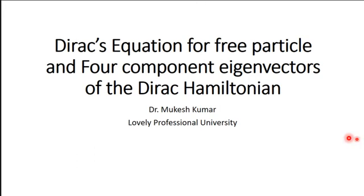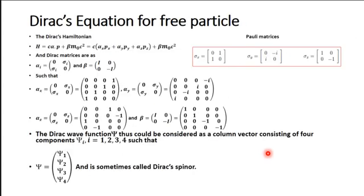Welcome students. Today we will discuss the Dirac equation for a free particle and its four-component eigenvectors. You are already aware of the Dirac Hamiltonian, written as H equal to c alpha dot p plus beta m-naught c-squared. If you expand alpha dot p, you can write it as alpha-x p-x plus alpha-y p-y plus alpha-z p-z plus beta m-naught c-squared.